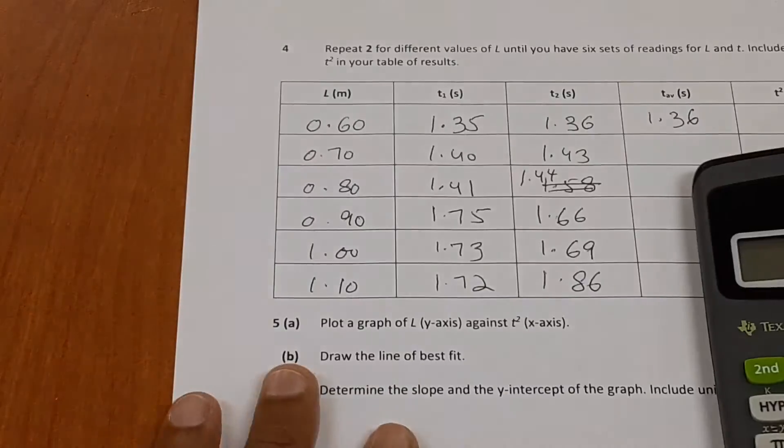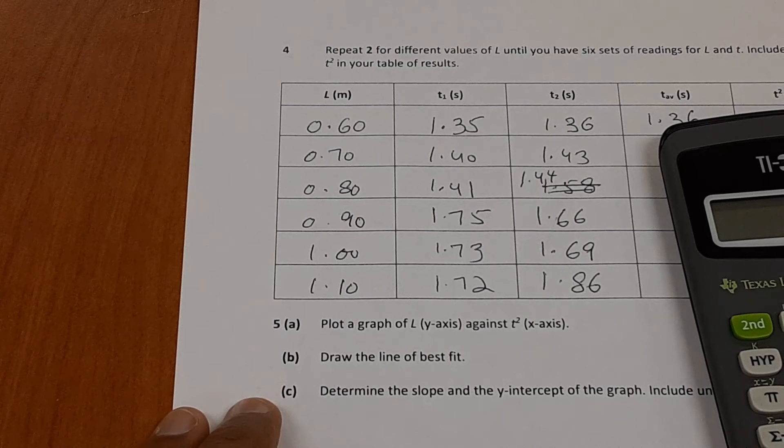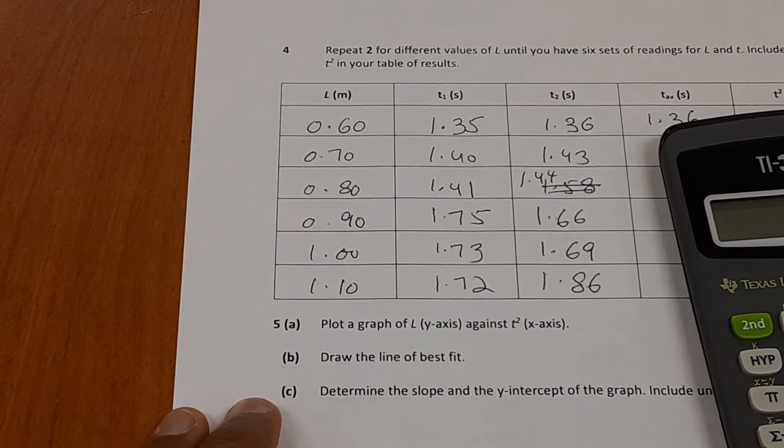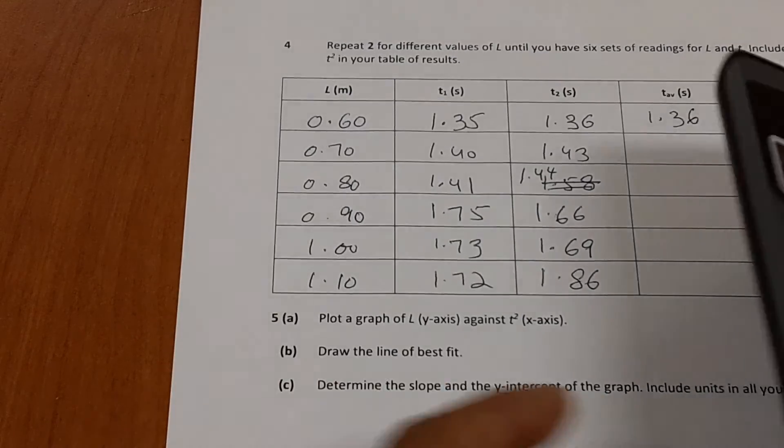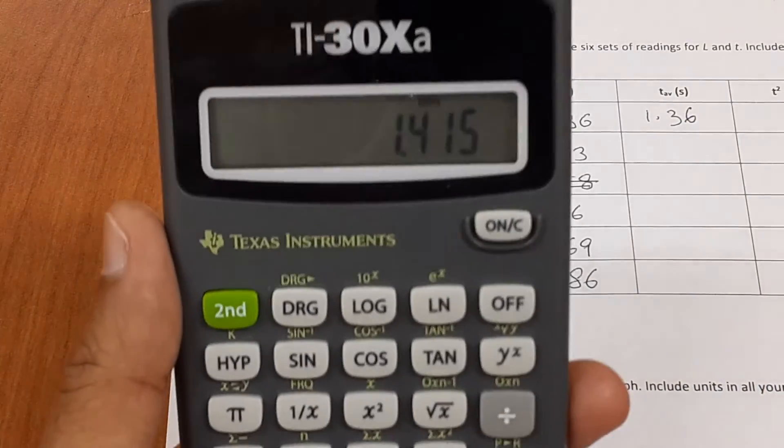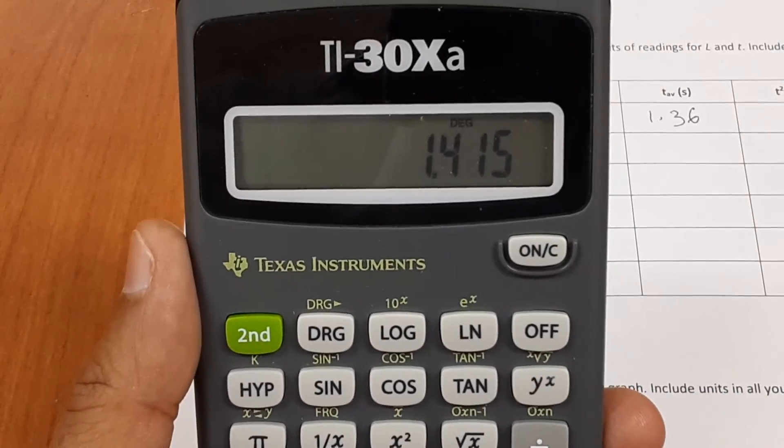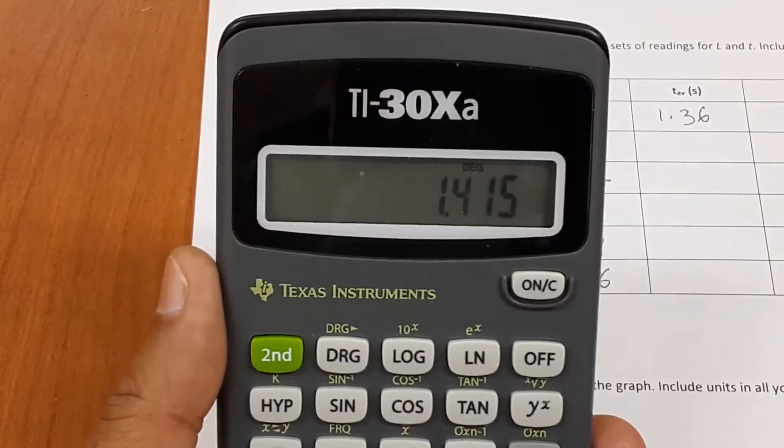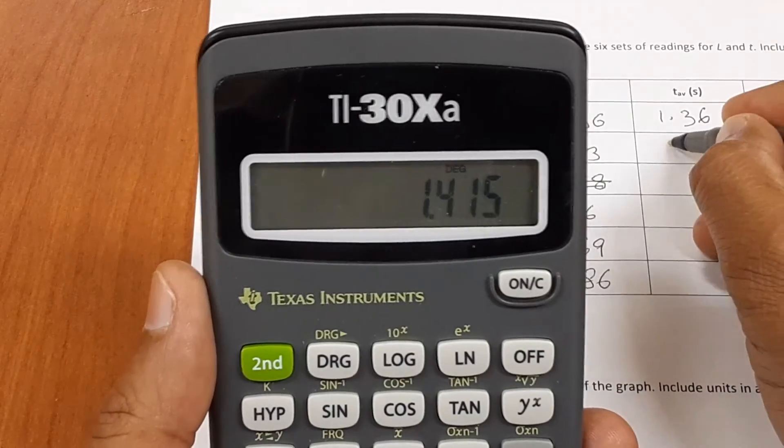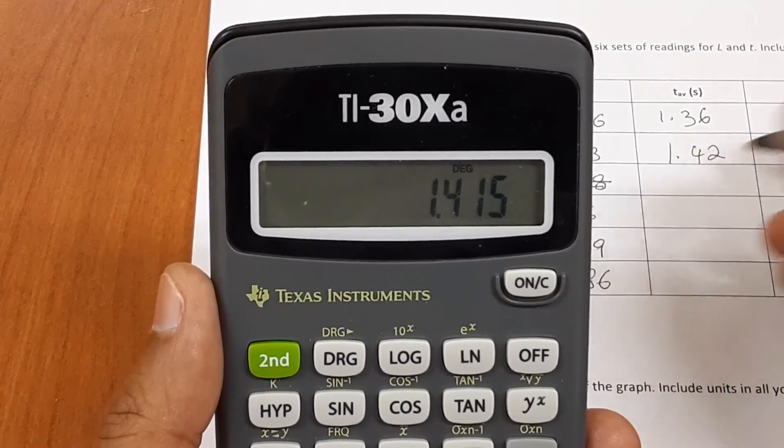So let's calculate the next one as well. And again, the calculator shows 1.415, which is four significant figures, but I will only write it to three significant figures. So I write it as 1.42.